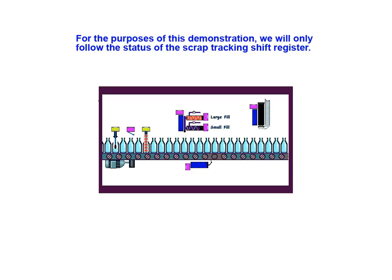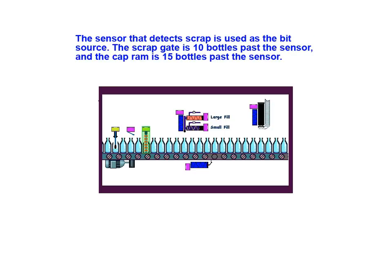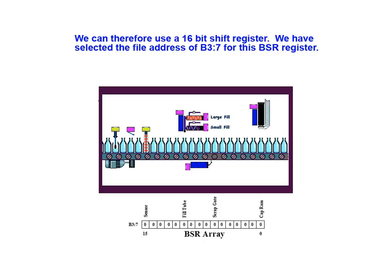For the purposes of this demonstration, we will only follow the status of the scrap tracking shift register. The sensor that detects scrap is used as the bit source. The scrap gate is 10 bottles past this sensor, and the cap ram is 15 bottles past this sensor. We can therefore use a 16-bit shift register.